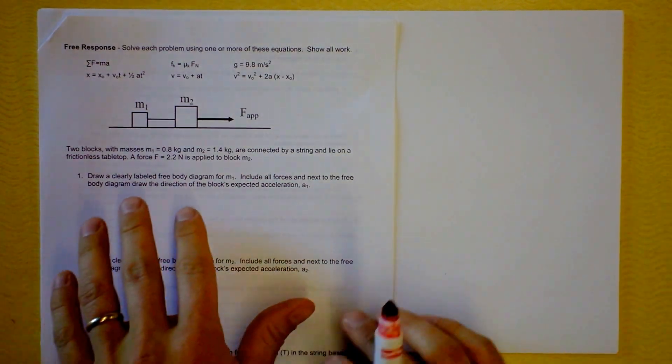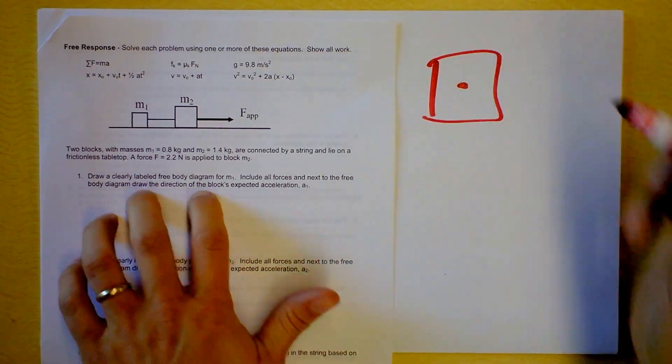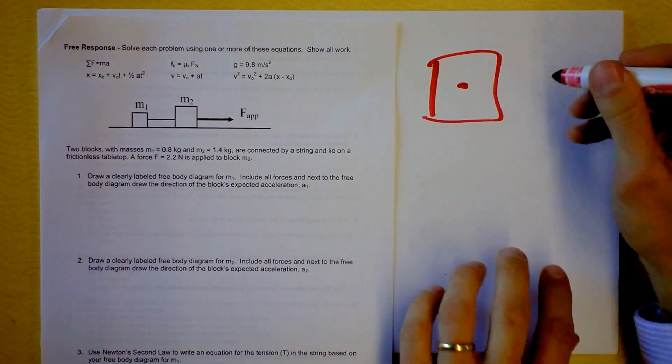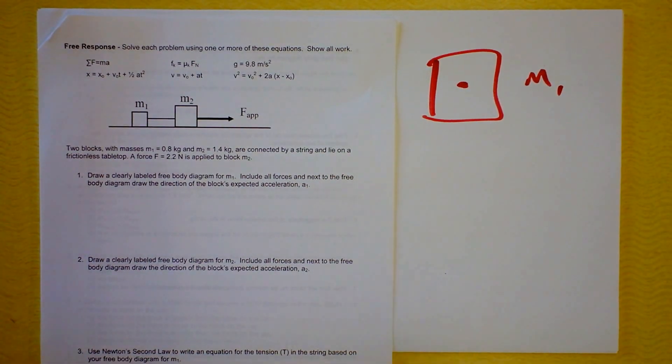So it asks first for a clearly labeled free body diagram for M1. I put M1 right here and I put a dot in the middle and you tell me what other things are happening to M1. We got gravity, Mg, which way? Down.